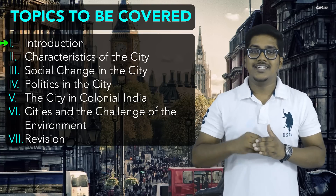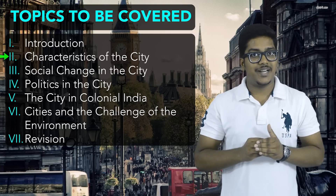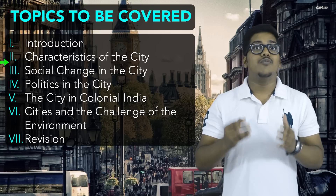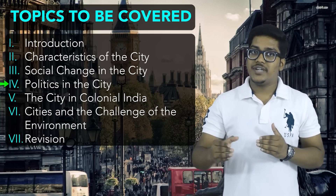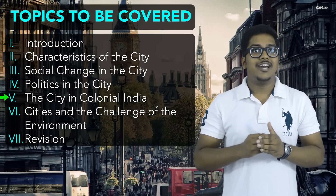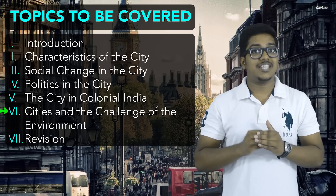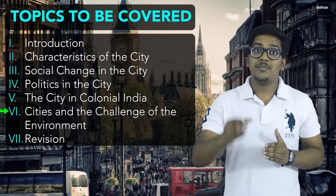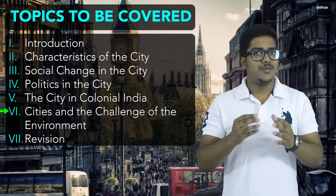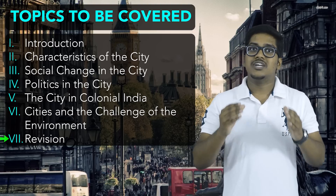We will complete this chapter in a total of seven lectures. This is the first lecture, which is introductory. In the second, third, and fourth lectures, we will learn about London — its characteristics, social change, and politics. In lecture five, we will learn about the city in colonial India, or Bombay. In lecture six, we will learn about urbanization in different cities and the environmental issues that arise, including some topics about Calcutta. And finally, in the seventh lecture, we will revise this chapter in short.